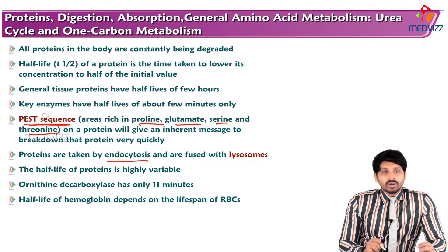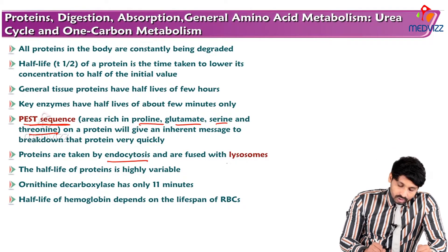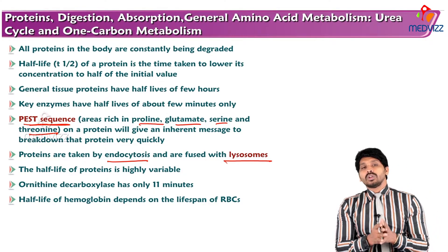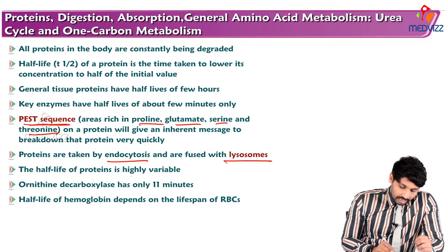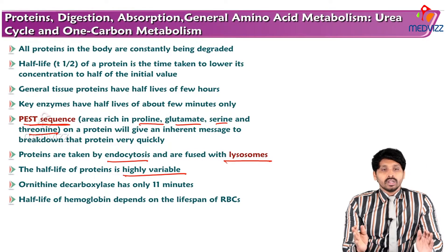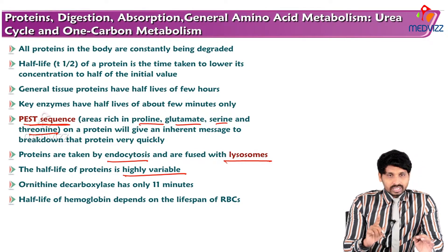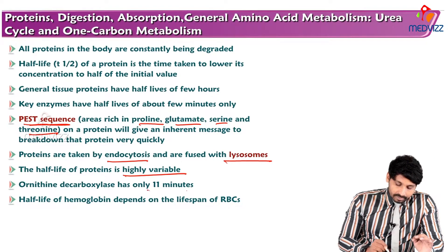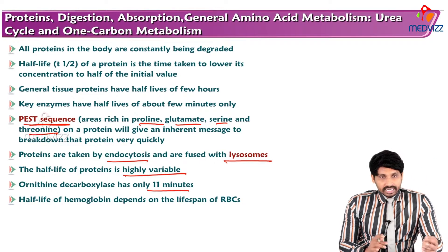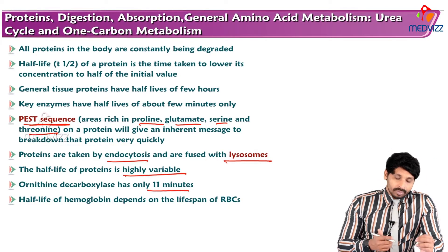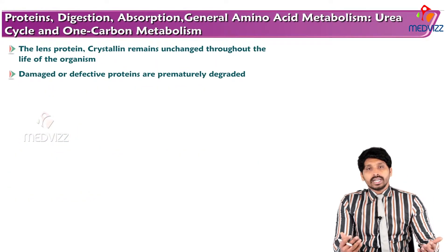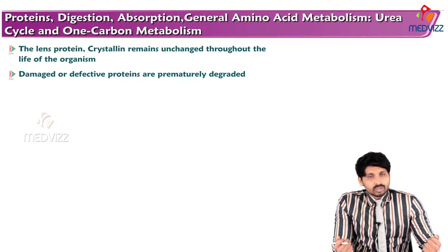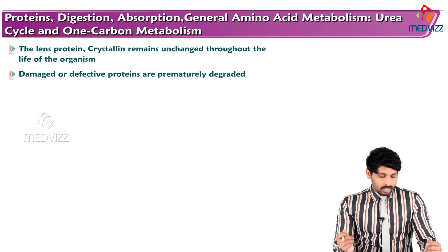One mechanism for breakdown is proteins taken up by endocytosis and fused with lysosomes, so lysosomes play a major role in breaking down half-life-completed proteins. The half-life of proteins is highly variable from protein to protein. For example, ornithine decarboxylase has a half-life of only 11 minutes, whereas the half-life of hemoglobin depends on the lifespan of the RBC, which is 120 days.